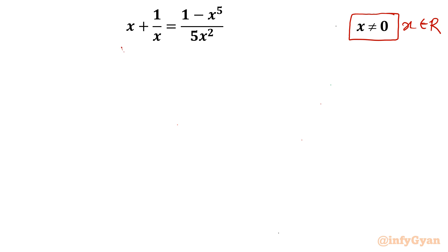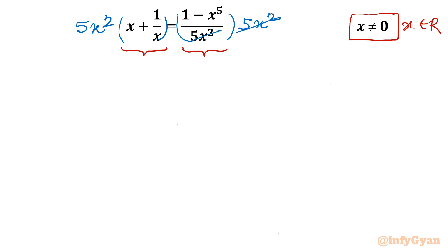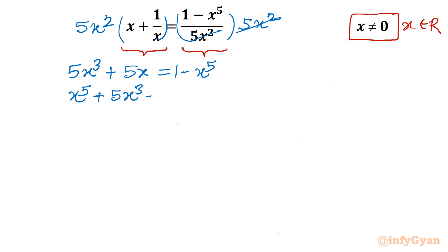If you look at the left-hand side, it is in reciprocal equation form, but the right-hand side cannot be converted similarly. So I will simply multiply both sides by 5x squared, since x is non-zero. After cancellation, expanding gives 5x³ plus 5x equals 1 minus x to the power 5. Taking all terms to the LHS: x⁵ plus 5x³ plus 5x minus 1 equals 0.